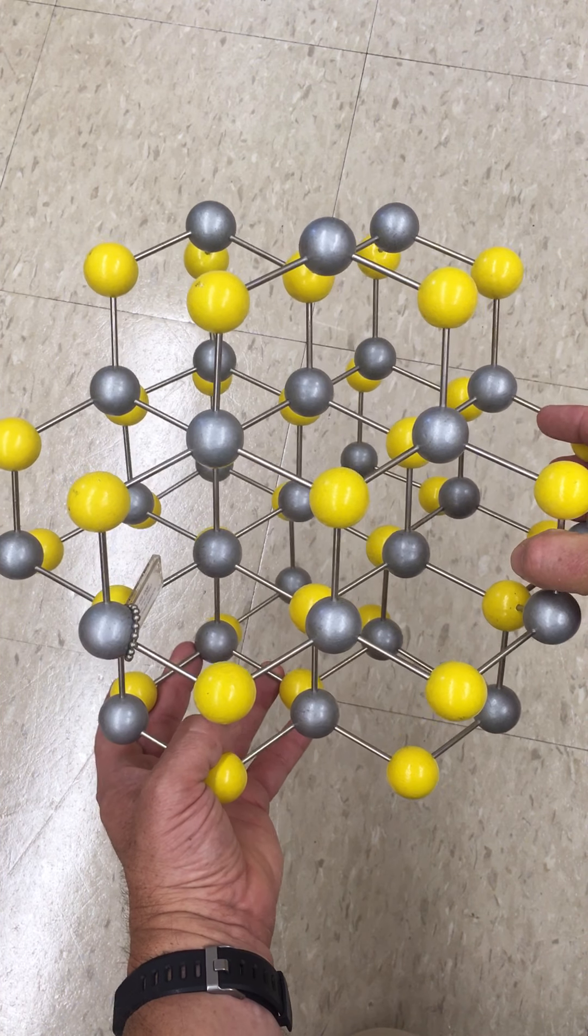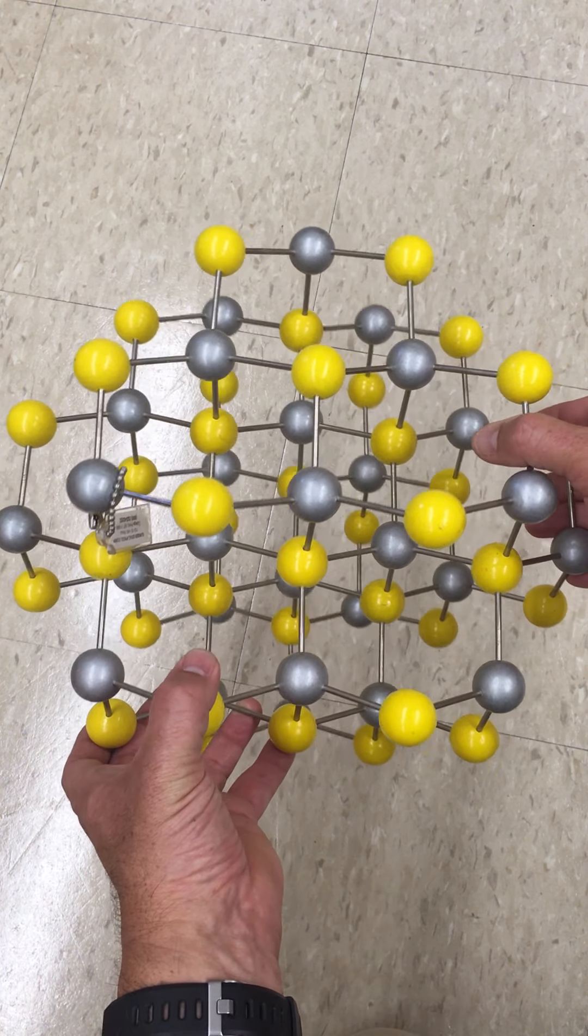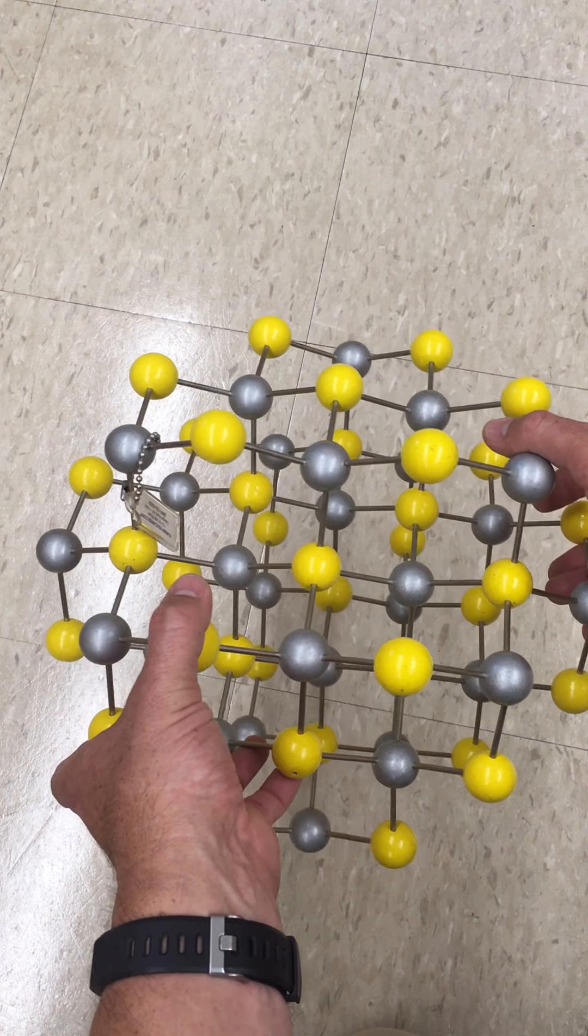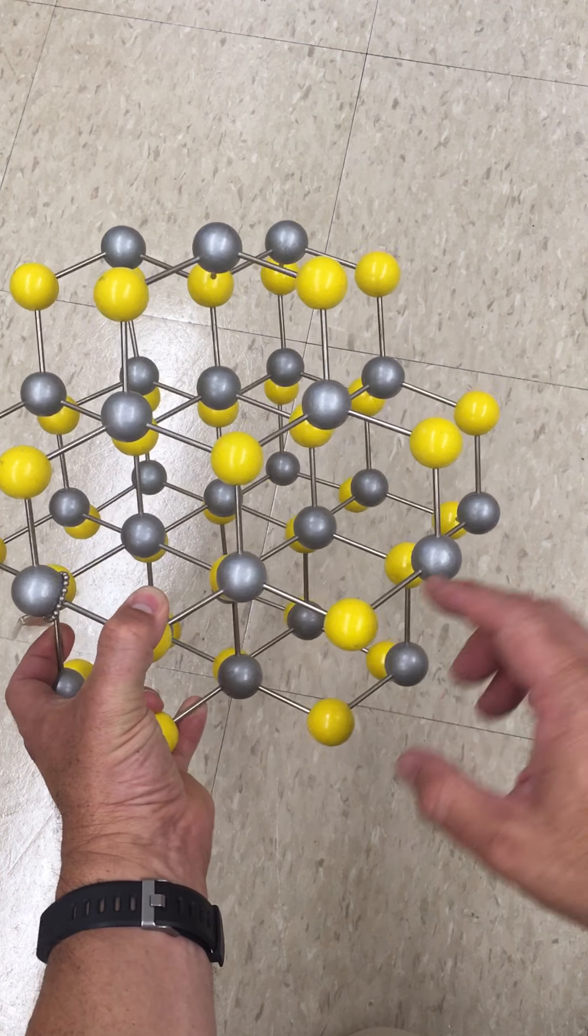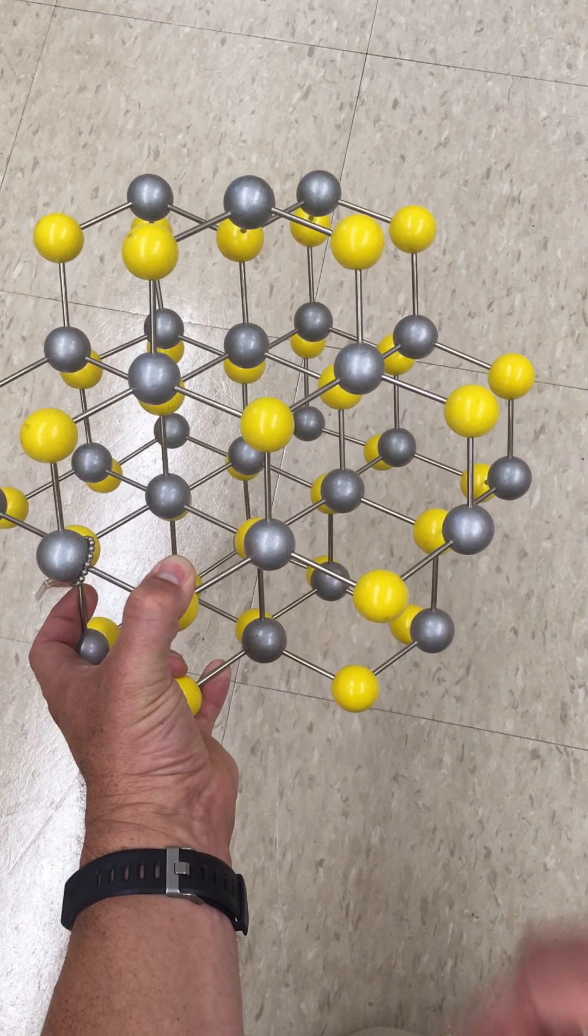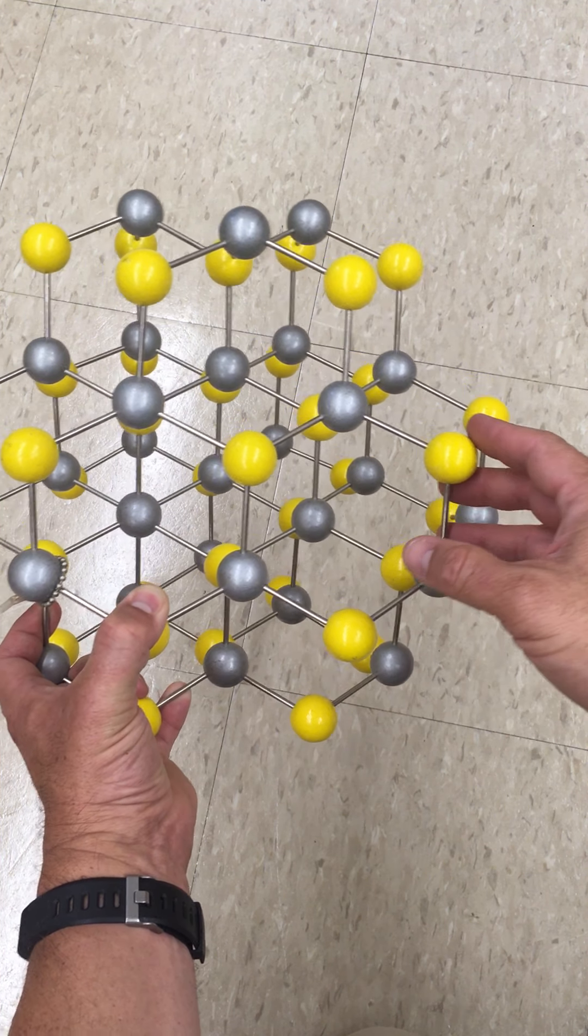And we could also make the same case for the geometry of the zinc ions as well. But we usually think about the zinc ions filling half of the tetrahedral holes in the sulfide structure.